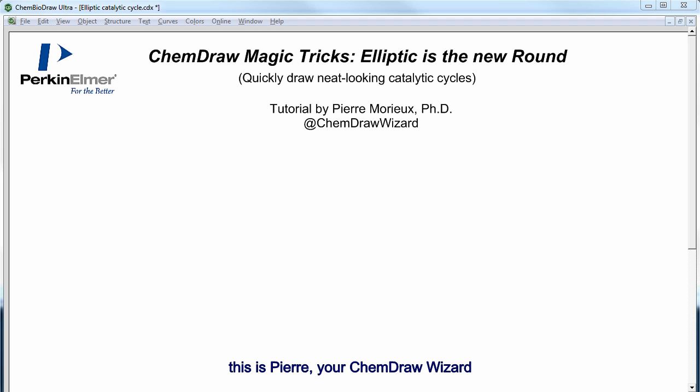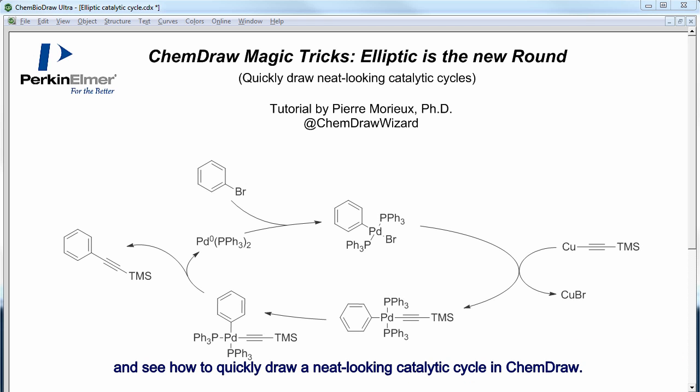Hello everybody, this is Pierre, your ChemDraw wizard. In this video we will go back to something a bit more serious than a Harlem Shake and see how to quickly draw a neat-looking catalytic cycle. For this, I have chosen this Sonogashira Palladium cross-coupling reaction mechanism, and to make things a bit more original, I'm going to show you how to have it shaped as an ellipse.